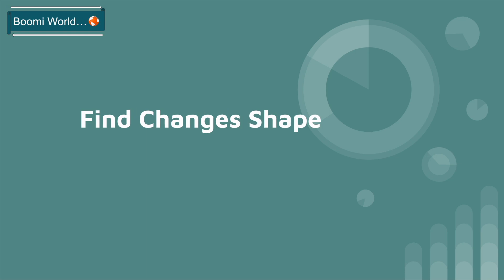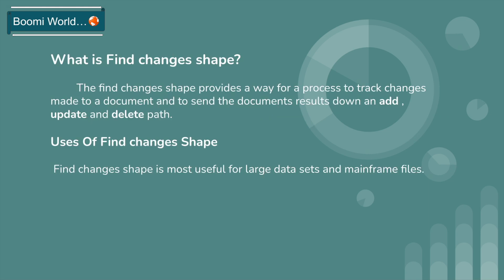First we'll look into what is Find Changer Shape. The Find Changer Shape provides a way for a process to track changes made to a document and to send the document results down an add, update, and delete path. Find Changer Shape contains three paths: add path, update path, and delete path.